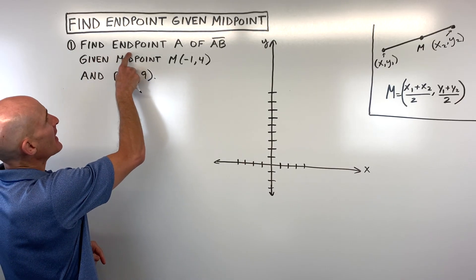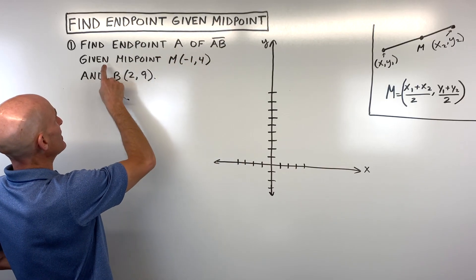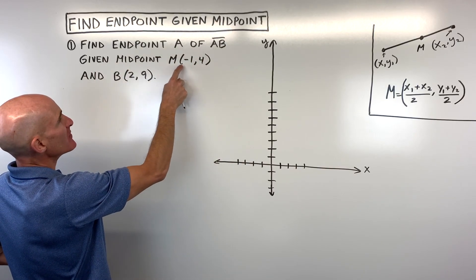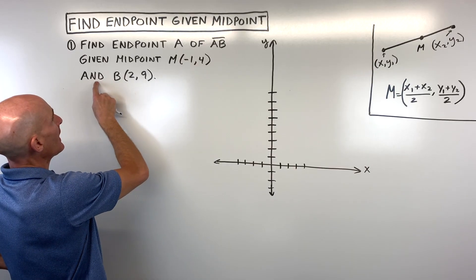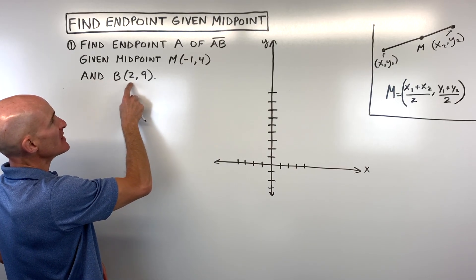It says find the endpoint A of segment AB, given that the midpoint M is negative one, four, and the other endpoint B is at two, nine.